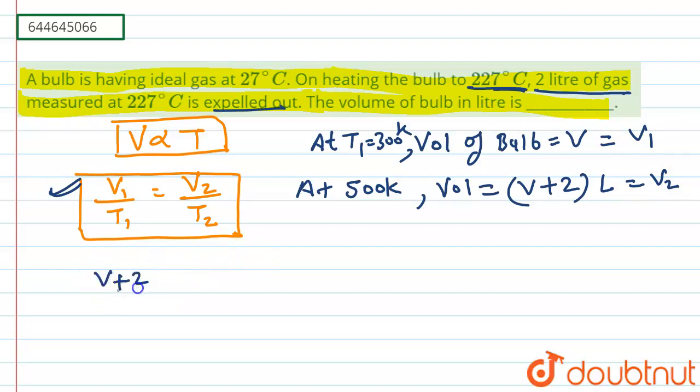That is V plus 2 divided by V equals T2 by T1. So on solving this we get V plus 2 by V equals 500 divided by 300. So basically if we solve this equation, we get 5V equals 3V plus 6.